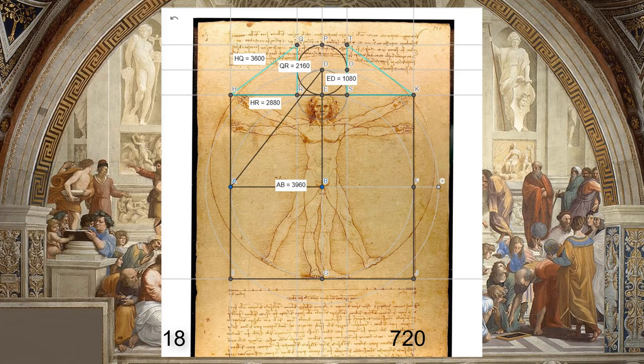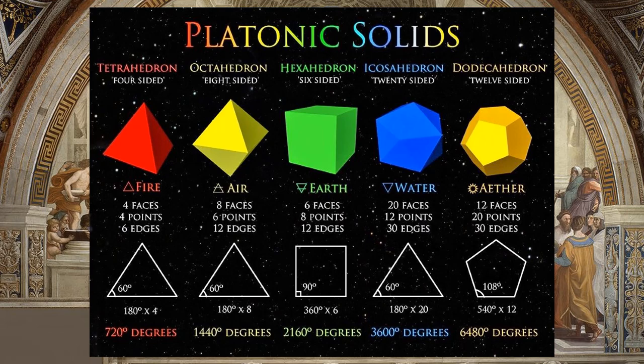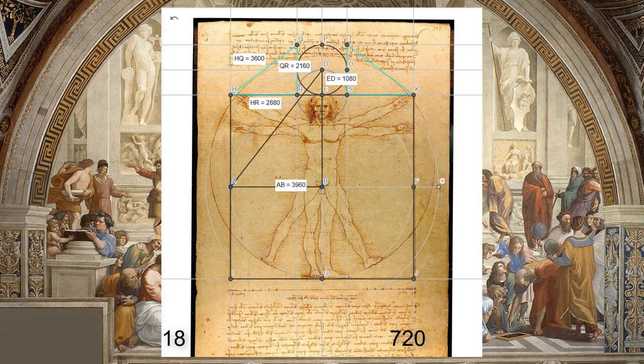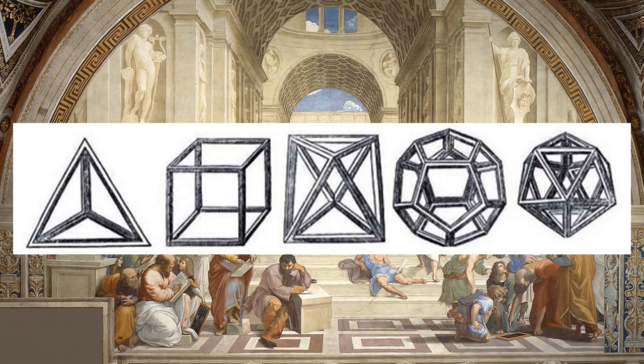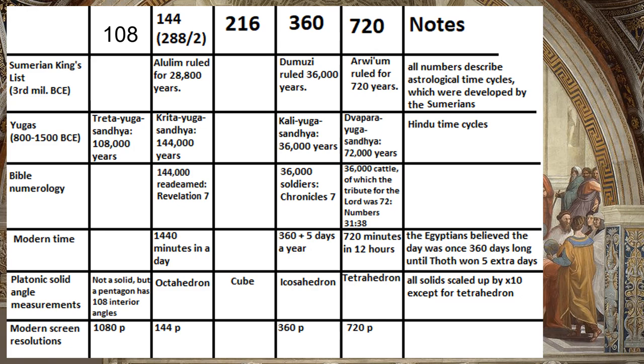Each number currently on screen is not only a multiple of nine, but a specific multiple of nine that da Vinci likely would have been familiar with. The numbers 720, 2,160, and 3,600 are the sum of internal angles of a tetrahedron, a cube, and an icosahedron respectively. The number 2,880 is twice 1,440 degrees — the sum of angles within an octahedron — and 2,160 divided by 2 gives us 1,080, the radius of the Moon.